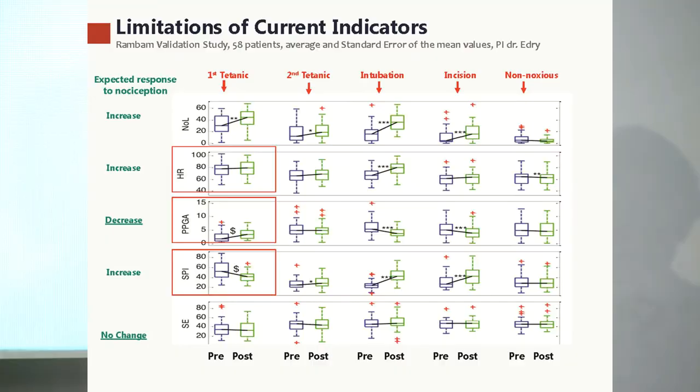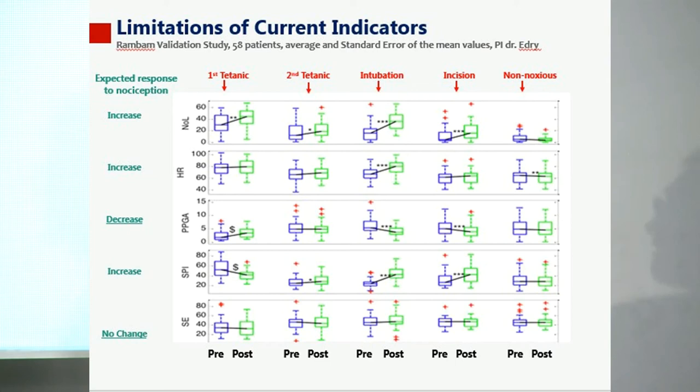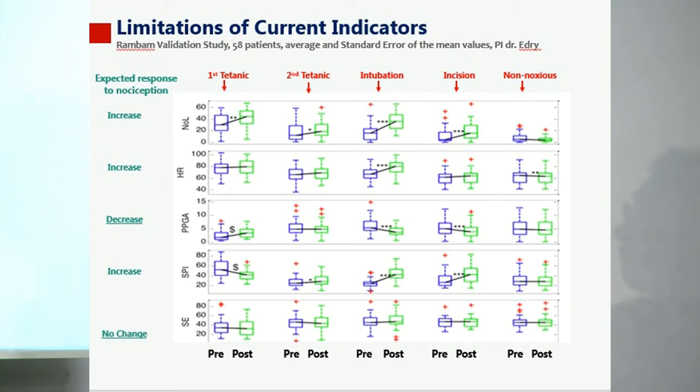I'd like to present this set of results. Ruthie Edry, who's in the corner there, actually did the study, and this is entirely her work. This is a complicated slide with a lot of information. Each row represents a different type of measure of noxious stimulation. NOL is what we're primarily interested in, and the other rows are components of NOL or other measures of noxious stimulation, including heart rate, photoplethysmography, the pleth index, and entropy.